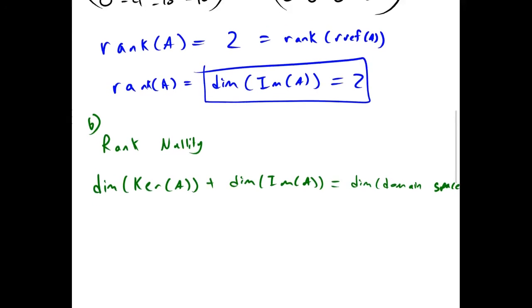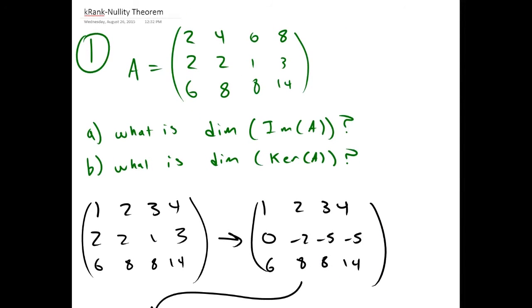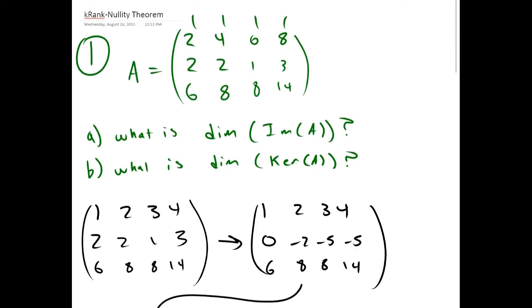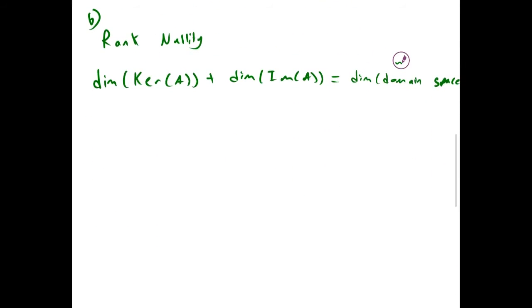Since we have a 3 by 4 matrix, the domain is R4. That means the dimension of the domain space is 4. And we already found the dimension of the image to be 2.